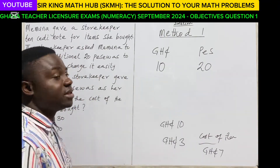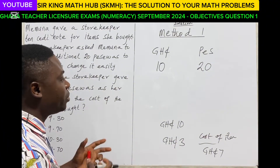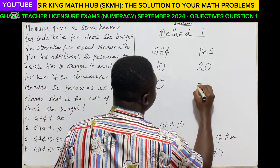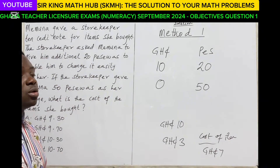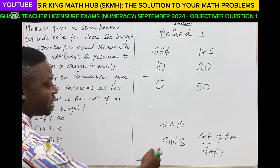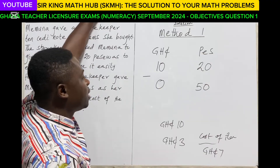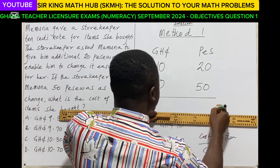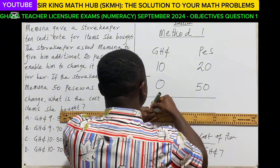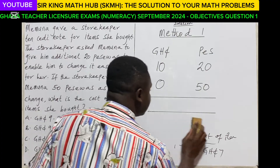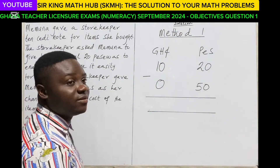This time, Memuna received a change of 50 pesewas. So how do we represent 50 pesewas? The cedis column would be 0 and the pesewas column would be 50. We want the cost price of the item, so we need to find the difference, which means we subtract. Let's begin with the pesewas column: 20 pesewas minus 50 pesewas gives negative 30 pesewas.